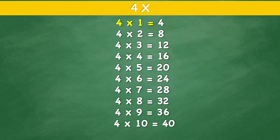4 times 2 equals 8. 4 times 3 equals 12. 4 times 4 equals 16. 4 times 5 equals 20. 4 times 6 equals 24. 4 times 7 equals 28.